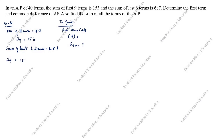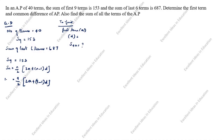S9 is equal to 153. Using the formula Sn = n/2 × (2a + (n−1)d), with n = 9: 153 = 9/2 × (2a + 8d). Cross-multiplying: 153 × 2 = 9 × (2a + 8d).